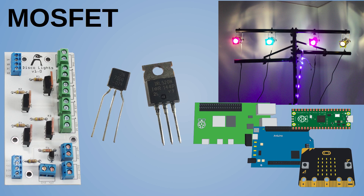MOSFET stands for Metal Oxide Silicon — which is how it's made — Field Effect Transistor — which is how it operates. The main difference compared with the bipolar transistor is that MOSFETs are voltage controlled; actually based on charge, but effectively we use a voltage to turn these on and off. The MOSFET is generally much more efficient in terms of current used and voltage drop across it. There are other types of FETs with different characteristics, but the MOSFET is commonly used in hobby electronics.